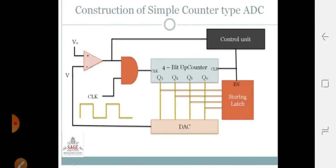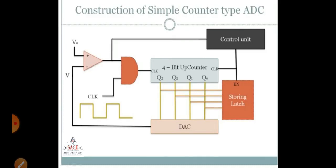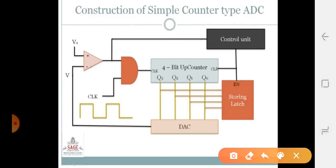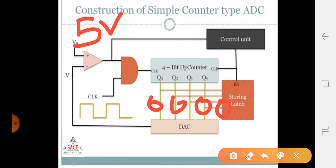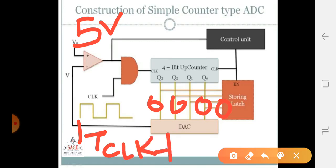Now we will see the working of counter type ADC. Suppose we have a voltage to measure — we will see that we have 5 volts to convert to digital form. So here we have a 4-bit up counter, which is initially at 0-0. We have 4 bits, then we apply a clock pulse, which represents the clock period.